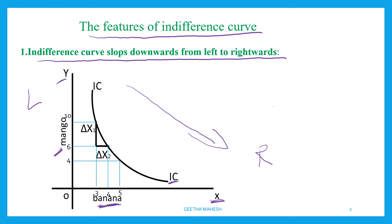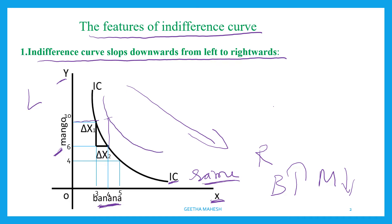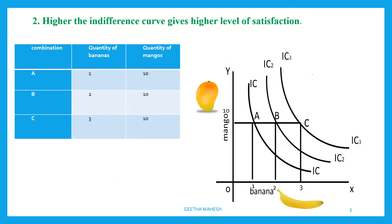If a consumer wants to stay on the same indifference curve and get the same level of satisfaction, then to have more bananas, he has to forgo mangoes. If he tries to increase bananas while keeping mangoes constant, he will move to a higher indifference curve. To remain on the same curve, to have more bananas, he must give up mangoes. You can see here: to have one additional unit of banana, he has sacrificed four units of mangoes.